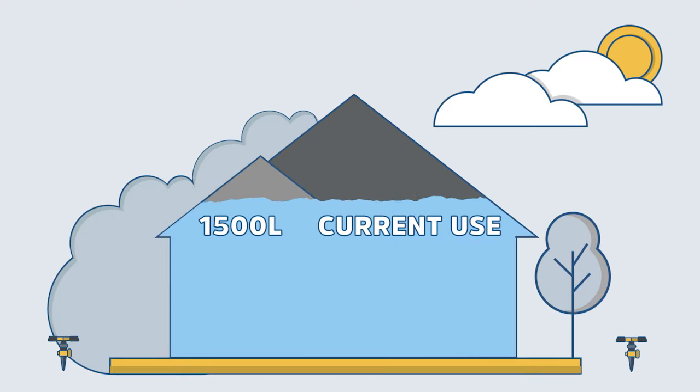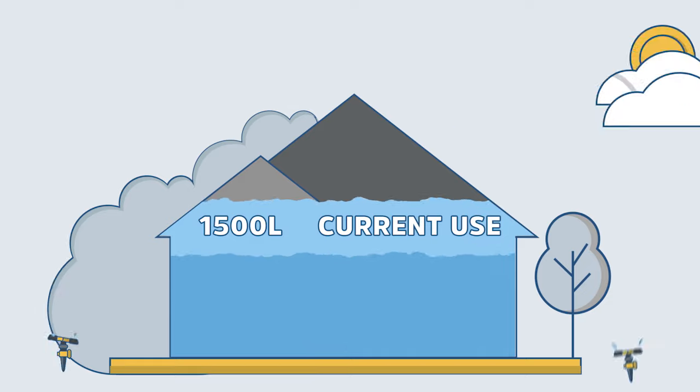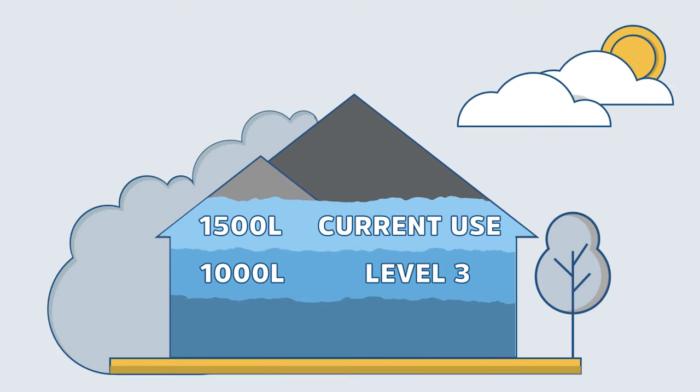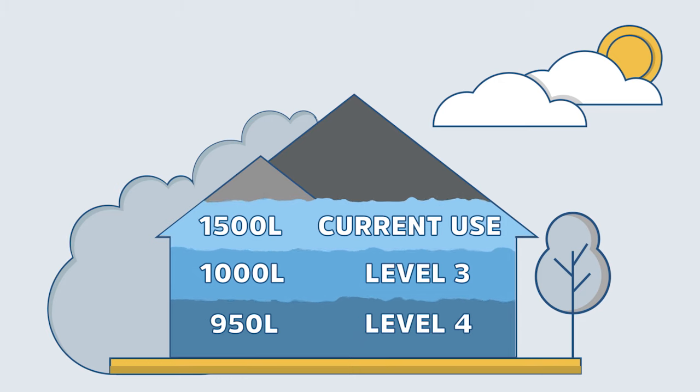The average household uses 1500 litres per day. Our level 3 target is 1000 litres or less per day. Our level 4 target is 950 litres or less per day.